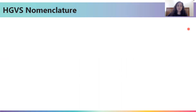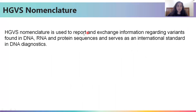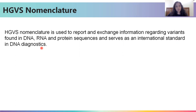We have already discussed HGVS nomenclature in great detail in the previous session. Just to brush up, HGVS nomenclature is basically used to report and exchange information regarding the variants that we are analyzing. These variants could be DNA, RNA, or protein sequence variants. The main aim behind creating the HGVS nomenclature was so that it could serve as an international standard while reporting variants. This becomes particularly important in applications such as DNA diagnostics, in which we typically take a patient sample, sequence it, and tell either the patient or the physician what clinically actionable variants a patient might have.